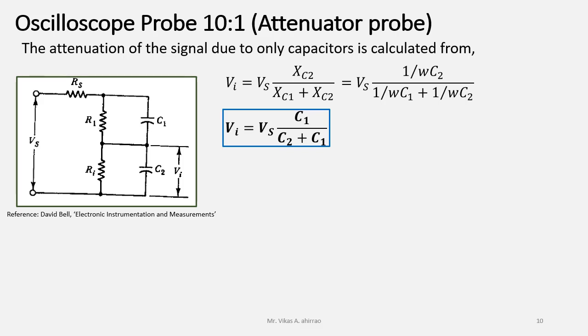If you will solve, then we can write Vi equals Vs times C1 upon C2 plus C1. Remember, C2 is equal to Ci plus Ccc.